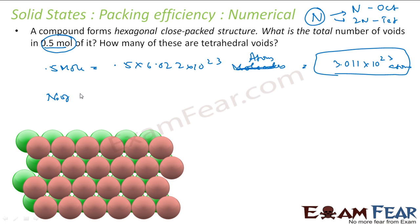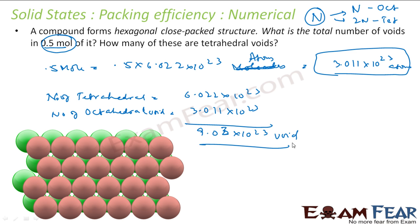Since we have these many atoms, the number of tetrahedral voids is double of this - that is 6.022 × 10^23. Number of octahedral voids is similar to this - 3.011 × 10^23. If you add these, you get 9.03 × 10^23 voids.